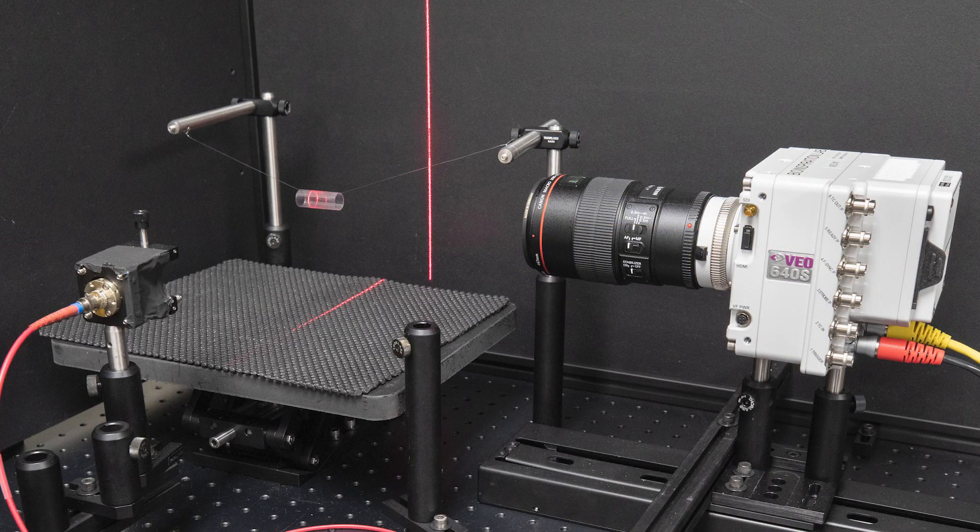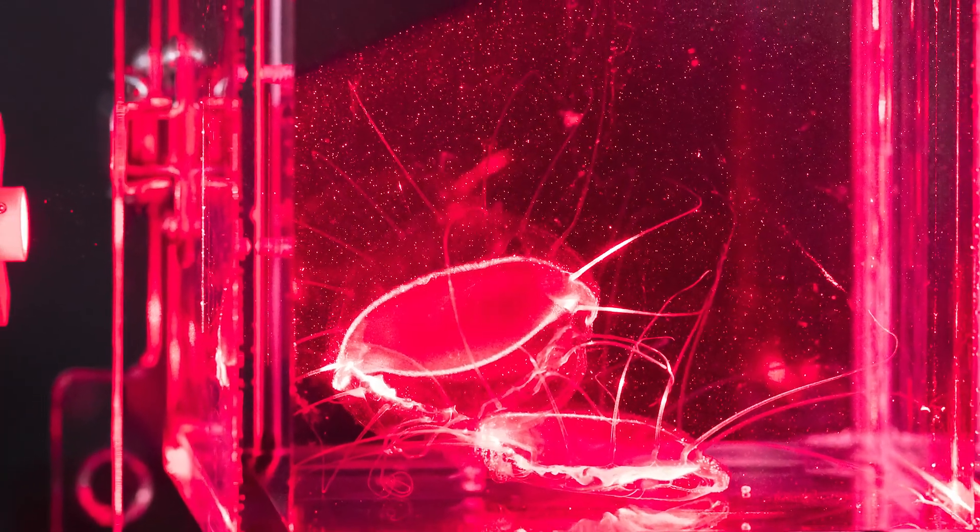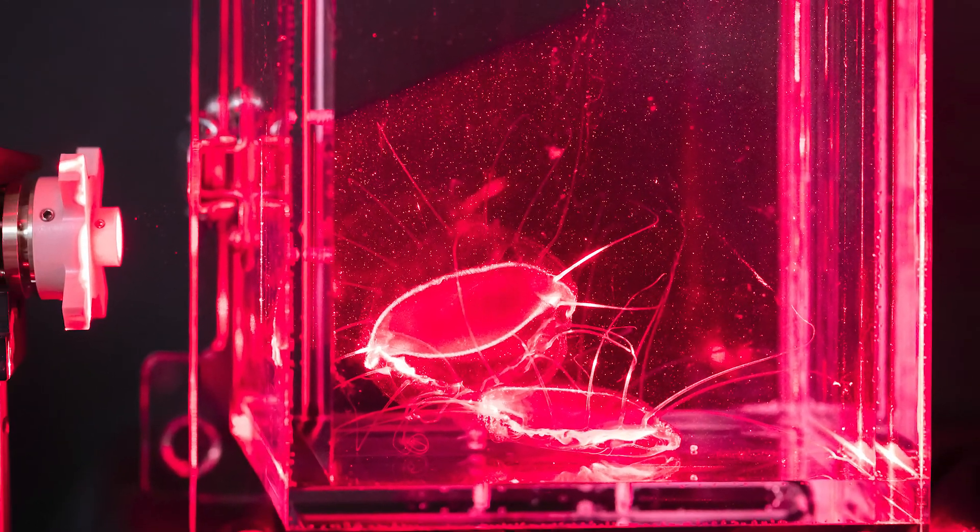They record their experiments in the lab using a Phantom V0640 high-speed camera. Because the lab is a controlled environment, the team can gather information about midwater animals that would be impossible to distinguish using standard cameras.